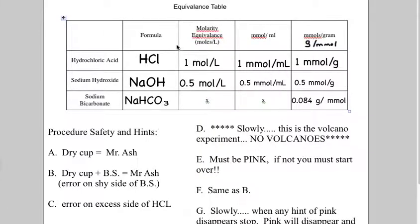This table for you for equivalences of the chemicals and concentrations that we're working with. So hydrochloric acid, when I dilute it, we make it one mole per liter, which makes it one millimole per milliliter. And basically the density is one, so we can say one millimole per gram. That makes our life easy.